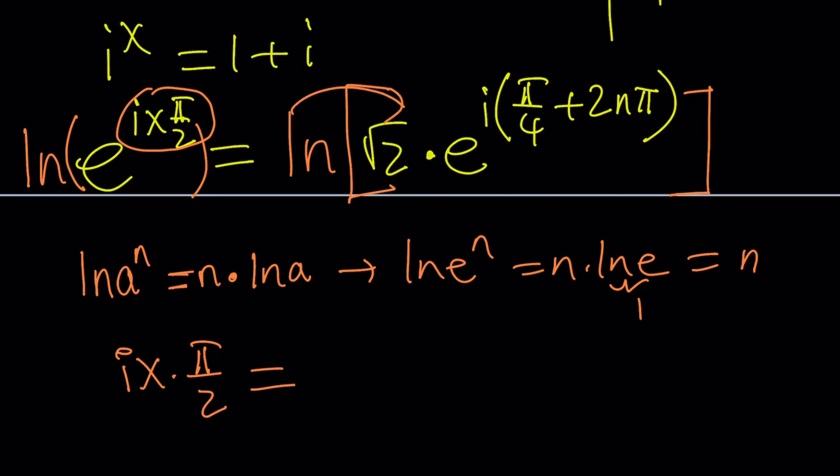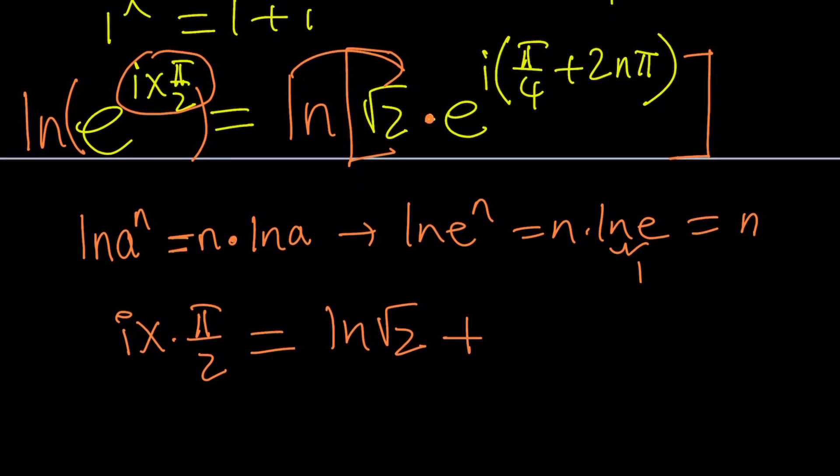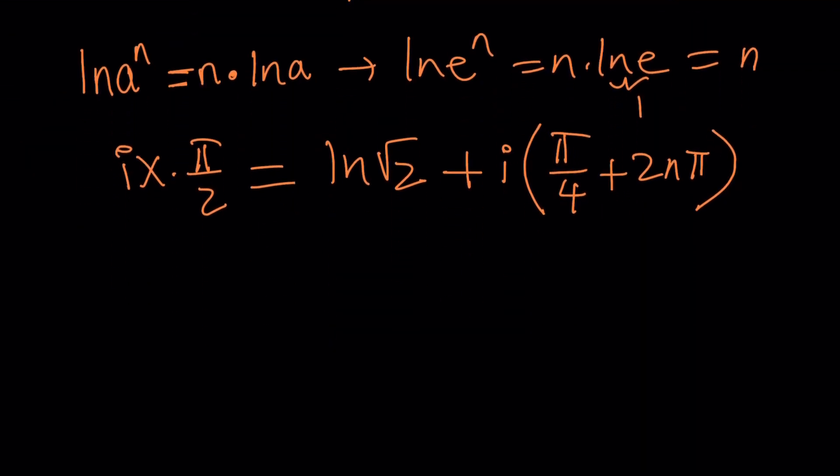Now, what happens when you ln root 2? Let's just write it as ln root 2. And then we have a product. If you are logging a product, then you can basically write it as sum of two logs. And then when you ln this, it's going to be the exponent again. So it's going to be i times pi over 4 plus 2n pi. Make sense?